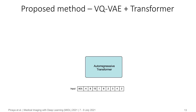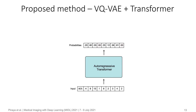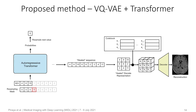The 1D sequence is then inputted into the autoregressive transformer. Due to its autoregressive nature, the transformer makes predictions based on the past values from the input sequence. For each position of the input sequence, the transformer outputs the probabilities of the following value. Using a threshold, we can highlight elements from the sequence that have a lower probability of occurring in a normal dataset, according to the transformer. We then create a resample mask indicating which elements in the sequence should be corrected. By using the transformer to resample these elements, we create a healed sequence. Finally, the sequence is reshaped to 2D and processed by the decoder of the VQ-VAE to reconstruct the brain image.